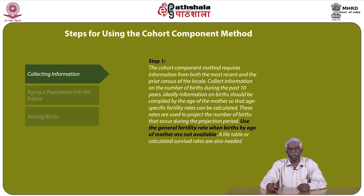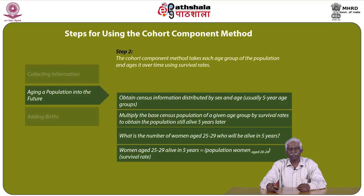There are specific steps involved in calculating the cohort component method. Step 1 is collecting information. The cohort component method requires information from both the most recent and prior census of the local area. We need to collect information on the number of births during the past 10 years. Ideally, information on births should be compiled by the age of the mother so that age-specific fertility rates can be calculated.